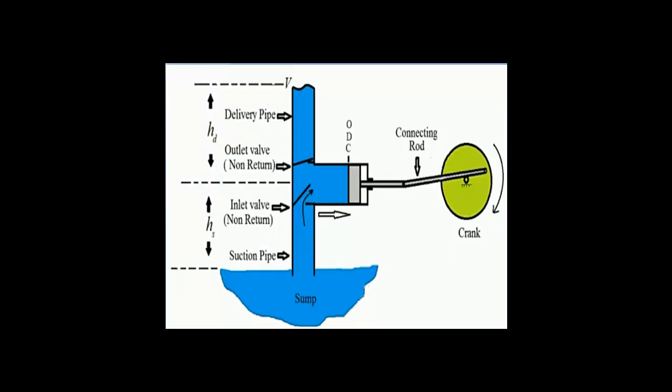When the piston moves from inner dead center to outer dead center with the rotation of the crank from 0 degrees to 180 degrees, at that time the suction valve is opened and water is lifted from the sump and enters into the cylinder.